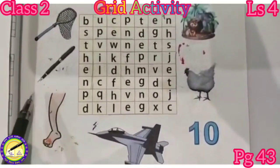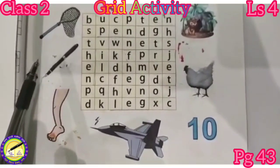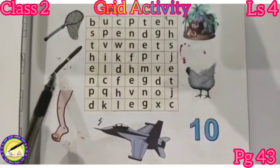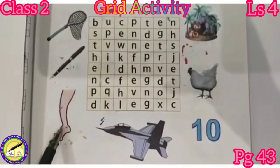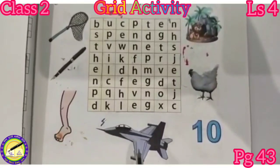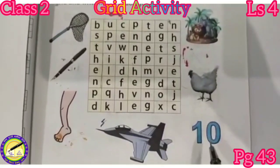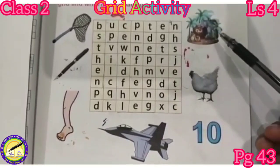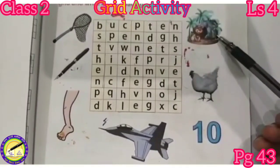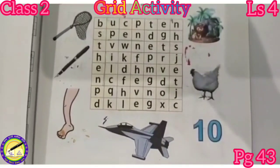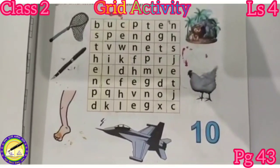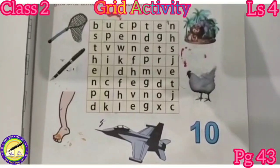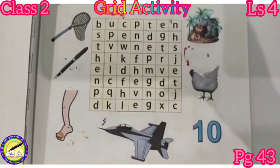Children, one grid and some pictures are given here. You have to find out the proper word according to the picture. Let us go through the pictures: this is a net, pen, leg. This is a picture of jet, ten, hen. And this one is a gen. Now you have to find out these words which are hidden in this grid.